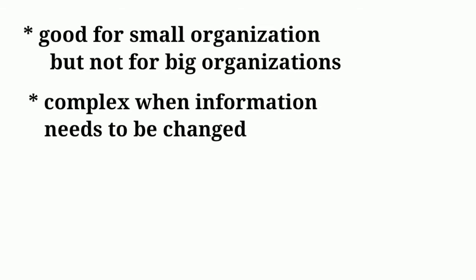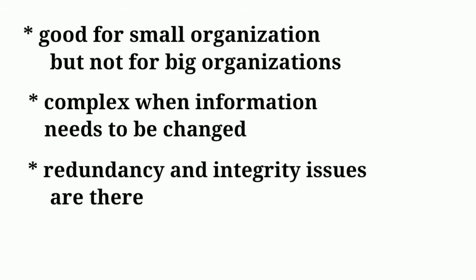Overall, this file system creates redundancy and integrity issues. Redundancy means duplicate data. Integrity issues mean inaccurate data. For example, if the same file existed in two departments — sales and marketing — and we changed the data in one place but not the other, that data becomes inaccurate or inconsistent. So redundancy and integrity issues are both drawbacks of the traditional file processing system.